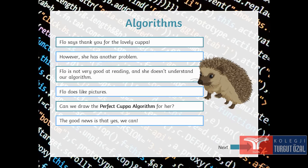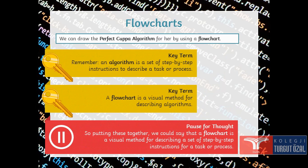The good news is that yes, we can. We can draw for her by using flow charts. And now, remember, an algorithm is a set of step by step instructions to describe a task or a process. The key term for now is a flow chart is a visual method of describing algorithms.